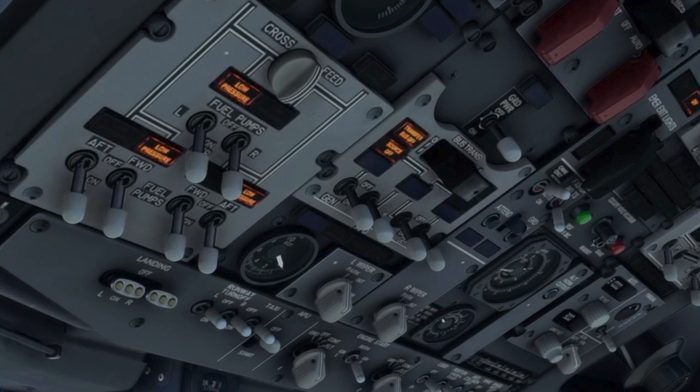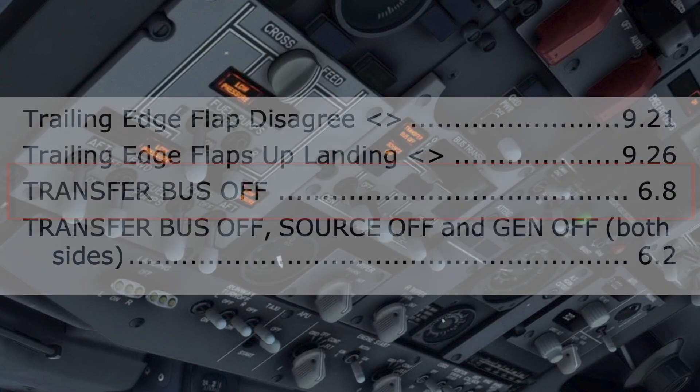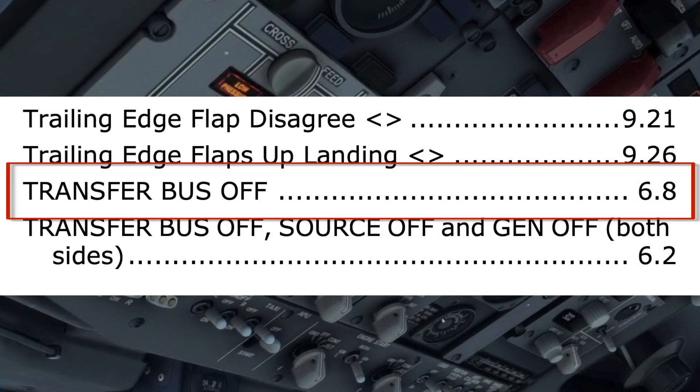The pilot flying then calls for the transfer bus off checklist. The pilot monitoring looks to see if the checklist is on the QRC, or applicable, then checks the quick reference handbook, known as the QRH. It can be found in the index under T, using the terminology of the text on the button: transfer bus off.